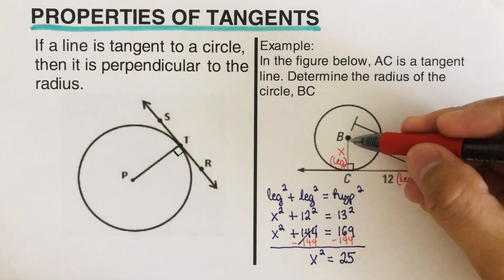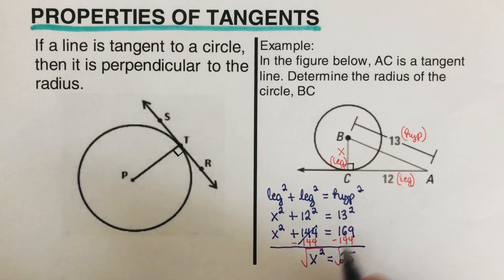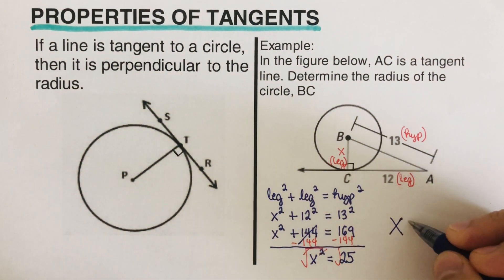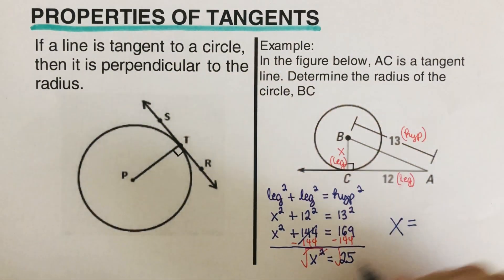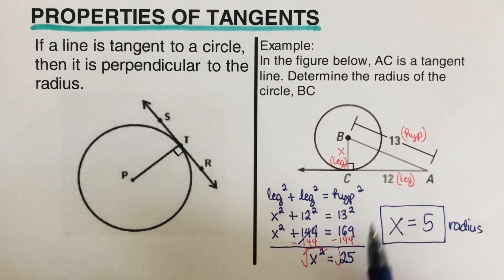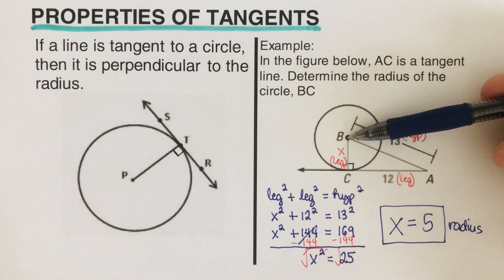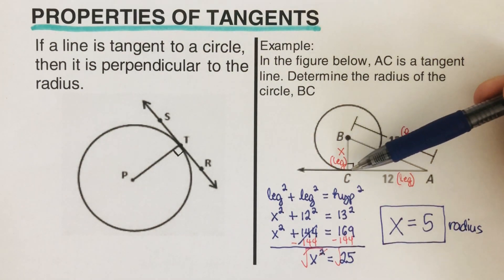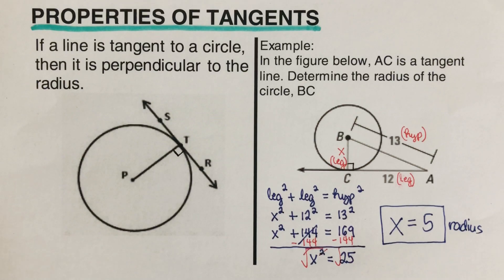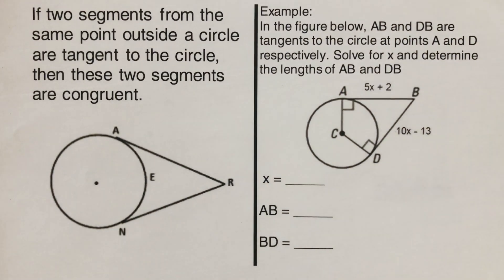We want x by itself, so we square root both sides. The square and square root cancel out, leaving x equals the square root of 25, which is 5. This is the radius of the circle, equal to BC — the segment from center point B to the point of tangency, C.